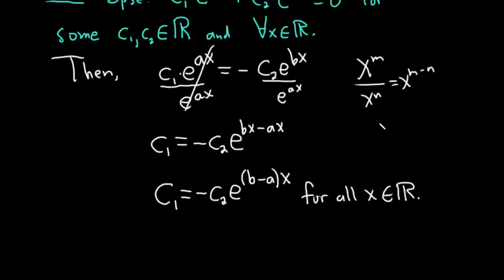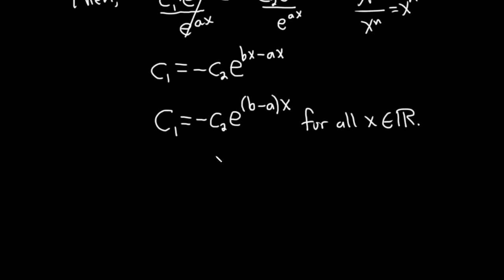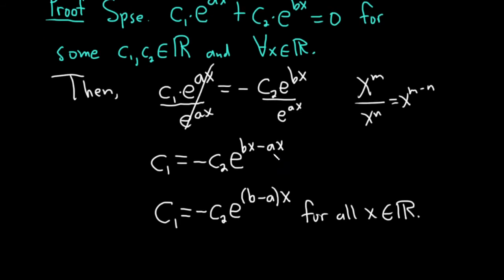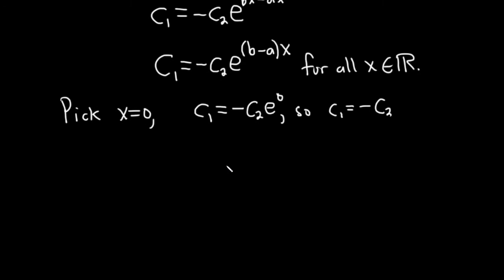Remember, we said that at the beginning, right? That's part of the criteria for independence. And so if we can show that the c's are zero, that shows that the functions are independent, right? Whenever you have a linear combination of functions equal to zero, if that holds for some c's and for all x, if it follows that all of the c's are zero, then the functions are independent. So we're going to show now that all of the c's are zero. And we can do that by picking values for x. For example, pick, let's see, x equals zero. That's going to give us c1 equals negative c2. And then we get e to the zero here, right? Because this is going to be zero. So we get c1 equals negative c2. And so now we just need to pick another value.